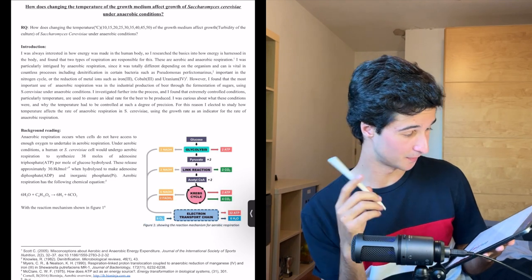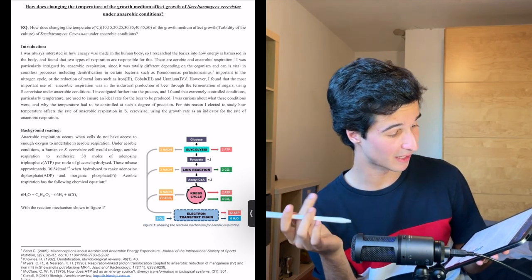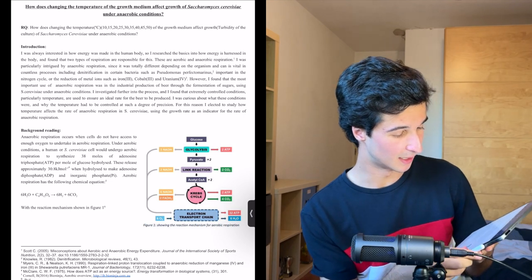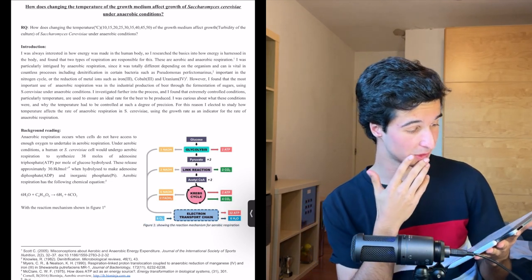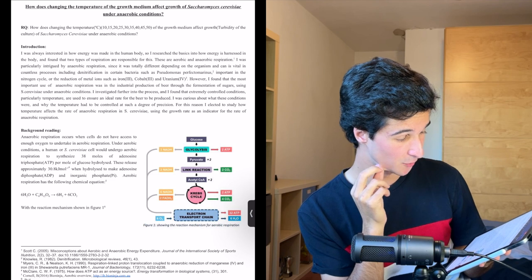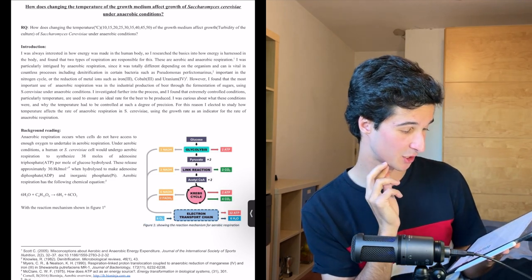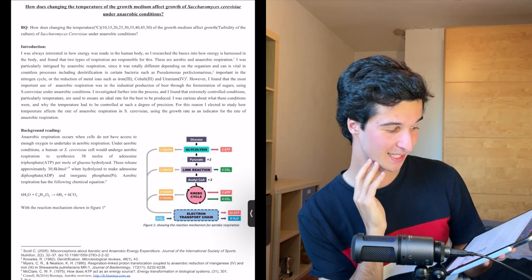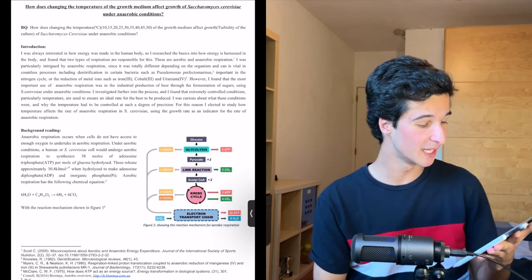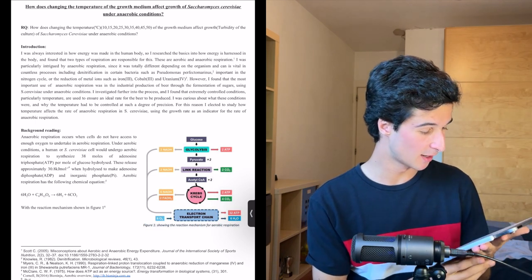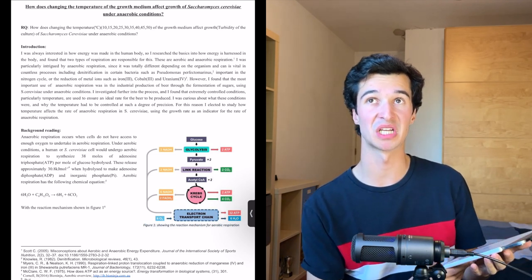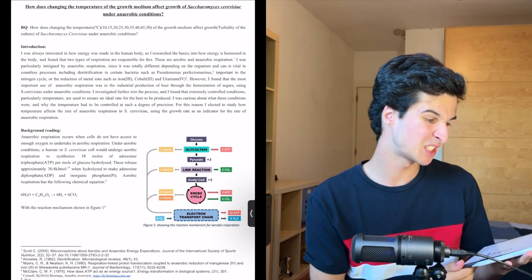I was always interested in how energy was made in the human body so I researched the basics into how energy is harnessed in the body and found that two types of respiration are responsible for this. These are aerobic and anaerobic respiration. I was particularly intrigued by anaerobic respiration. I found that the most important use of anaerobic respiration was in the industrial production of beer through the fermentation of sugars using Saccharomyces cerevisiae under anaerobic conditions. So instead of actually measuring respiration, I'm just measuring the growth rate and being like respiration, which doesn't quite add up.